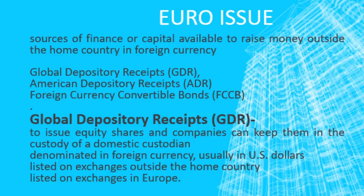The first important Euro instrument is Global Depository Receipts (GDR). A company can issue equity shares and keep them in the custody of a domestic custodian. There will be an overseas depository bank that issues securities in the nature of GDR in the foreign market. The domestic market is the custodian of the equity shares, and the depository bank operates in foreign countries.